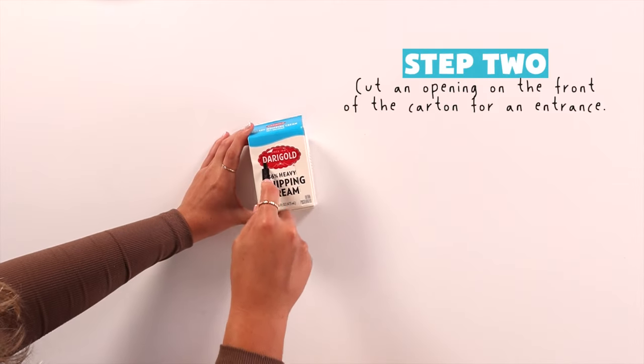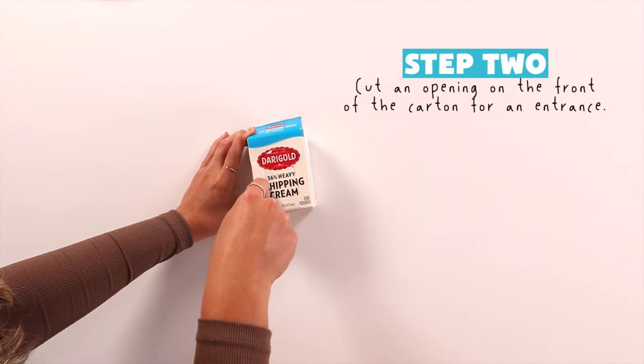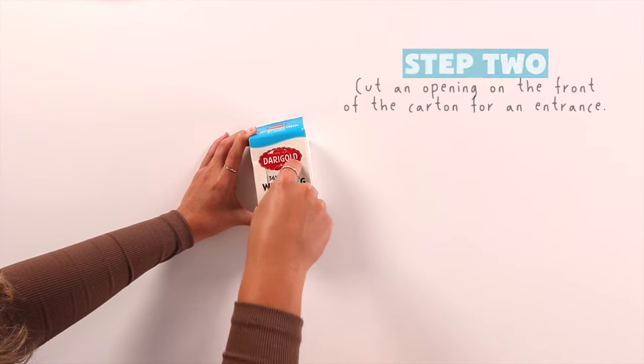Then, cut a small door for the birds and poke a hole with scissors under the door.